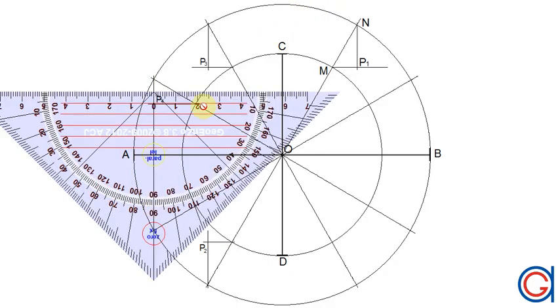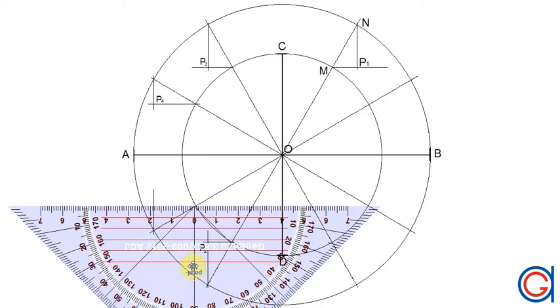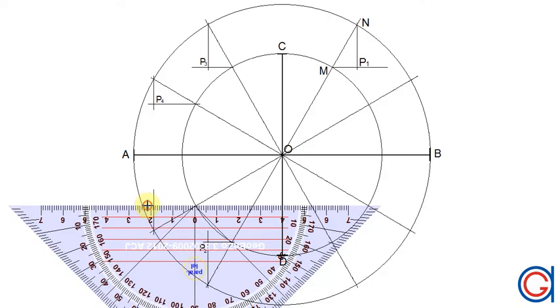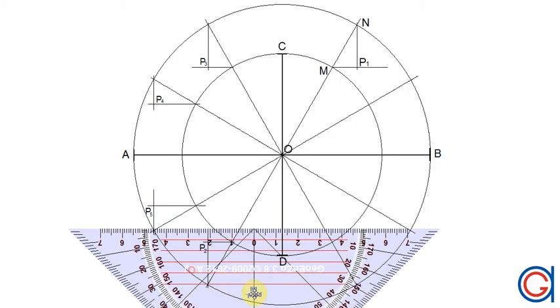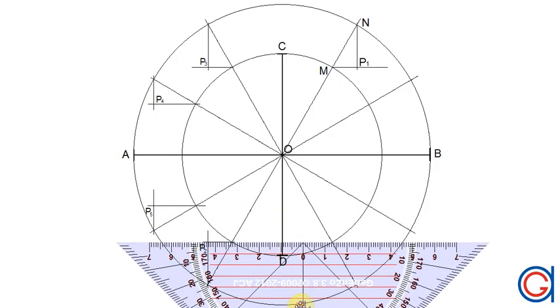We'll repeat the process again on the bottom half of the circle. To get P5, P2 is already done. So we'll go to the right-hand side to get P6.